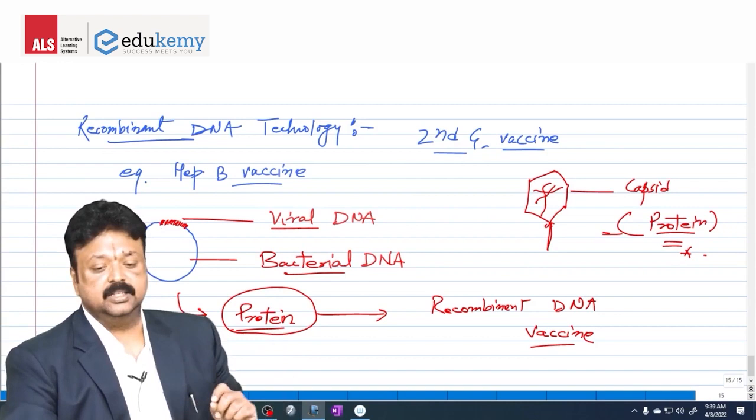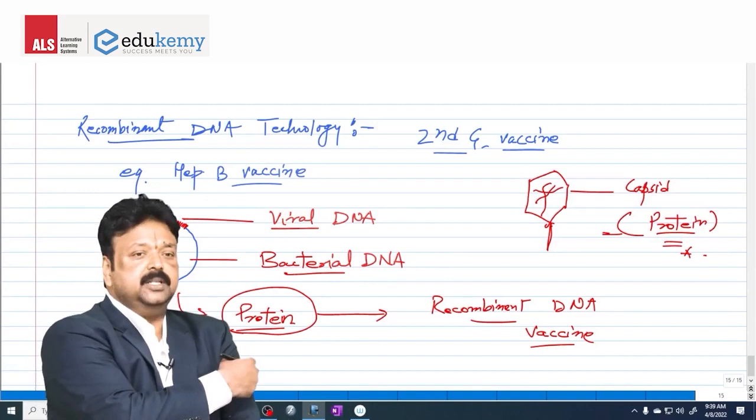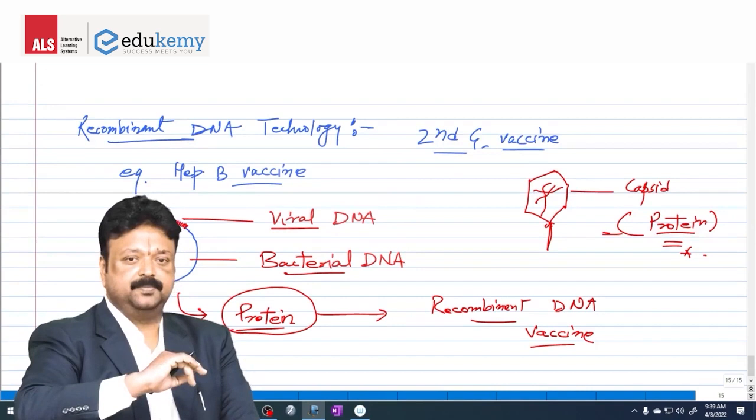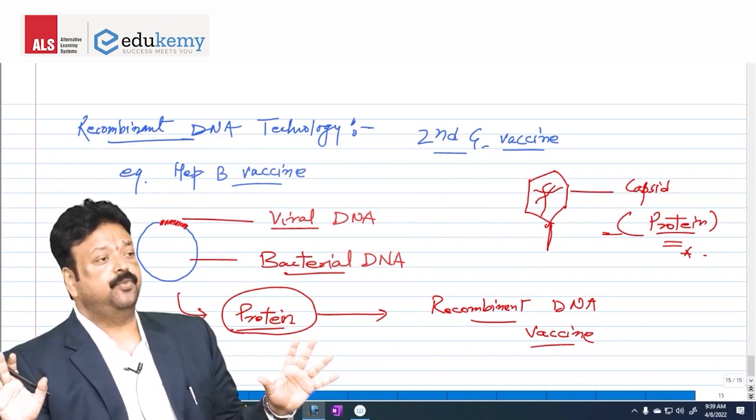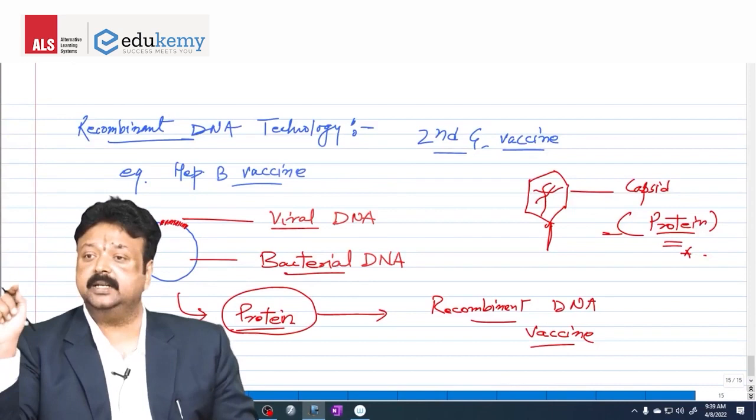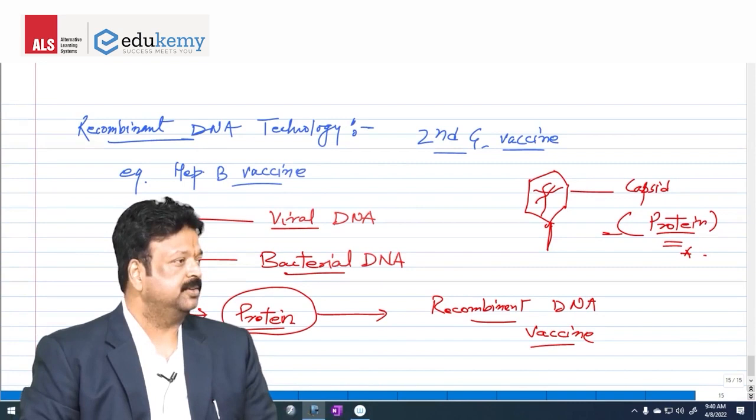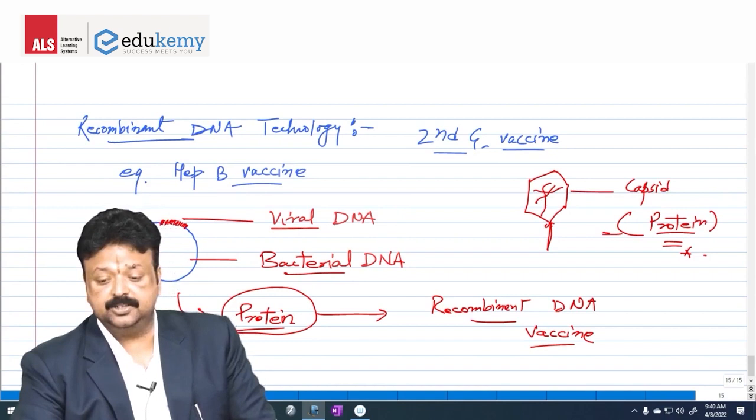This protein is now going to be the recombinant DNA vaccine. Once it is administered in the body, the body will make antibodies against those proteins. And the antibodies will always be ready for entertaining this virus. And if the hepatitis B virus is entering in the body, immediately it is going to be vanished. This is recombinant DNA protein, second generation vaccine.